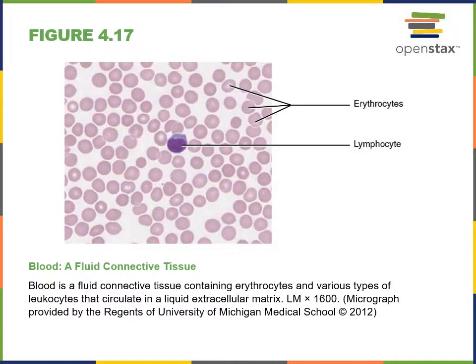Fluid connective tissues are a type of connective tissue where the matrix is a thin liquid and does not contain a network of fibers. Blood is an example of fluid connective tissue. The liquid in blood is called plasma, which is mostly water with dissolved nutrients, minerals, and proteins. The cells of blood include erythrocytes or red blood cells, which transport oxygen; leukocytes or white blood cells, which defend against infection; and thrombocytes or platelets, which are specialized for hemostasis — preventing blood loss by forming clots.